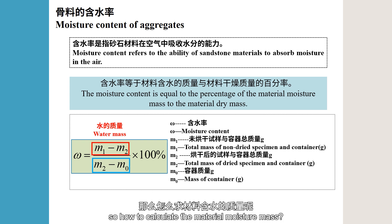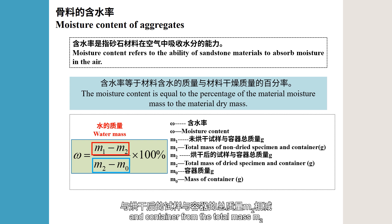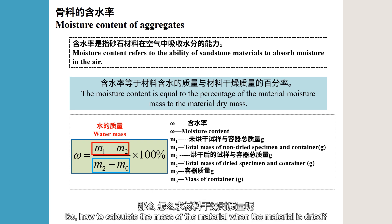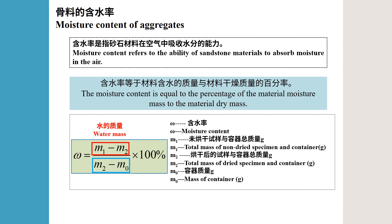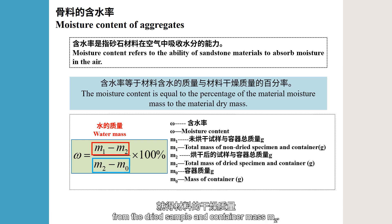The mass of water is obtained by subtracting the total mass M1 of the undried sample and container from the total mass M2 of the dried sample and container. The mass of the dried material is obtained by subtracting the container mass M0 from the dried sample and container mass M2.